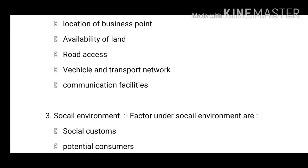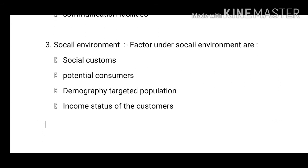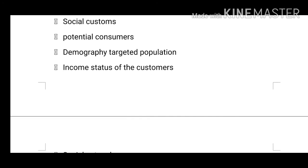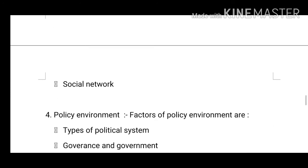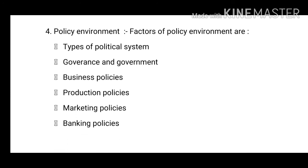The factors of social environment are: social customs, potential consumers, demographic and targeted population, income status of the customer, and social networks. The fourth element is policy environment, and the factors of policy environment include types of political systems.